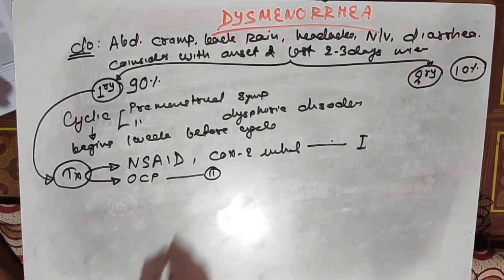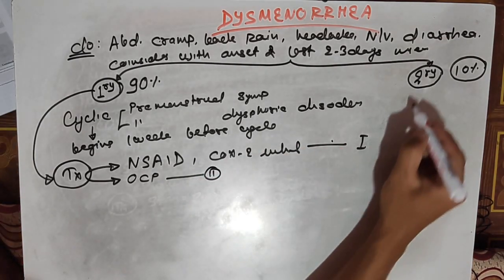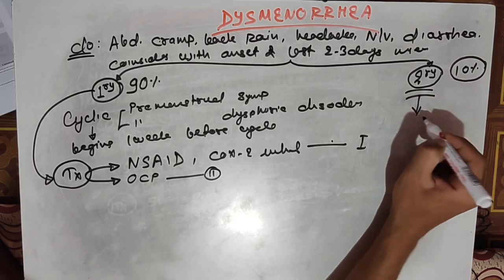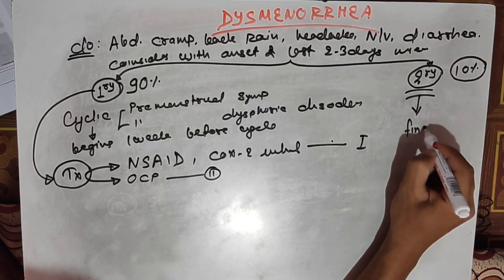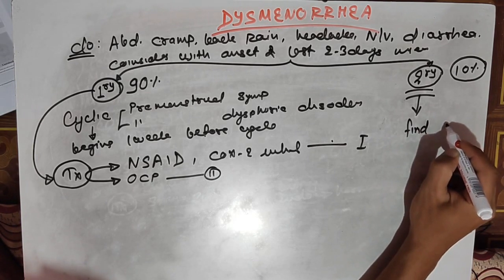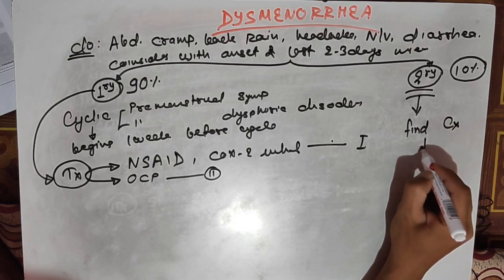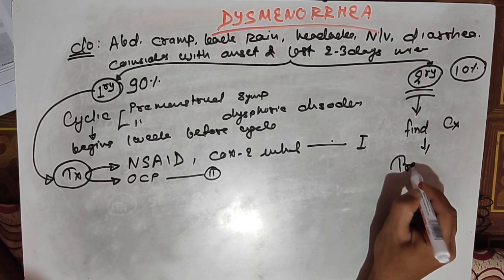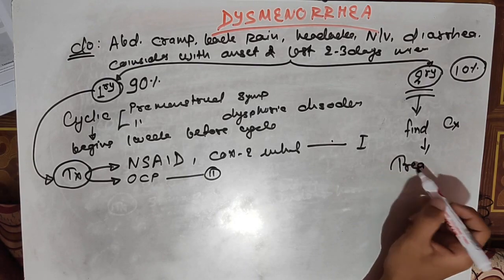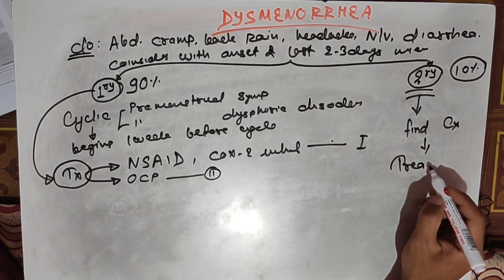For secondary dysmenorrhea, which is due to pelvic pathology, find the cause and then treat the cause. As a result, the dysmenorrhea or painful condition will be resolved.